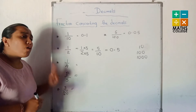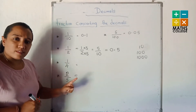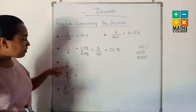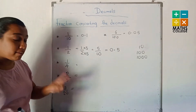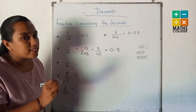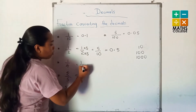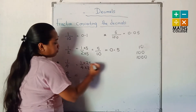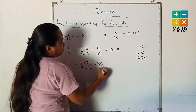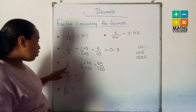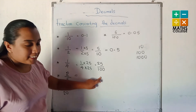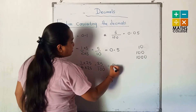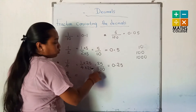The next example has denominator 4. Can 10 be divided by 4? No — 2 remains. Can 100 be divided by 4? Yes. 100 divided by 4 equals 25. Then 1 over 4 multiplied by 25 over 25 gives 25 over 100. The denominator 4 is converted to the power of 10, which is 100. It can be written as the decimal 0.25, since 100 has two decimal places.